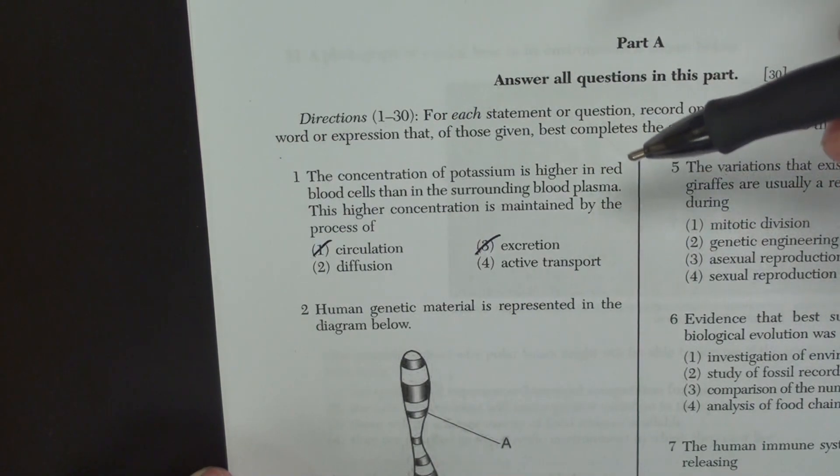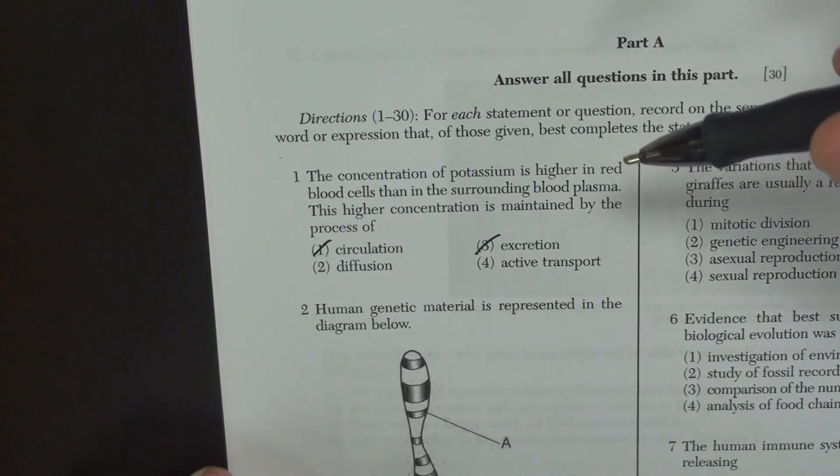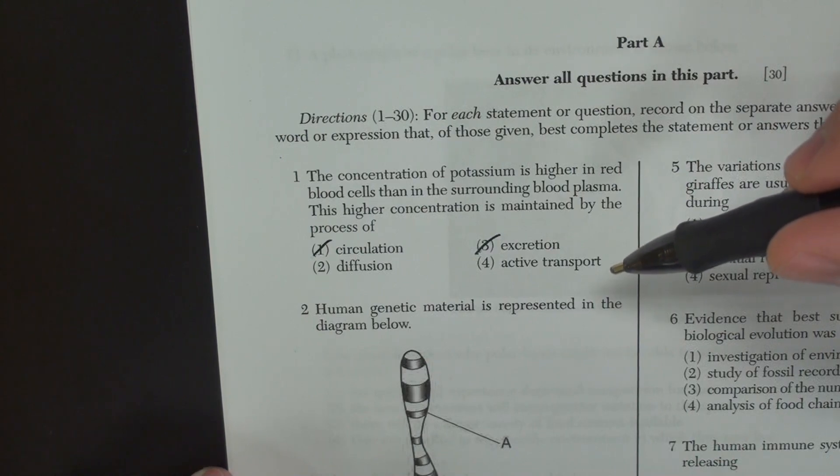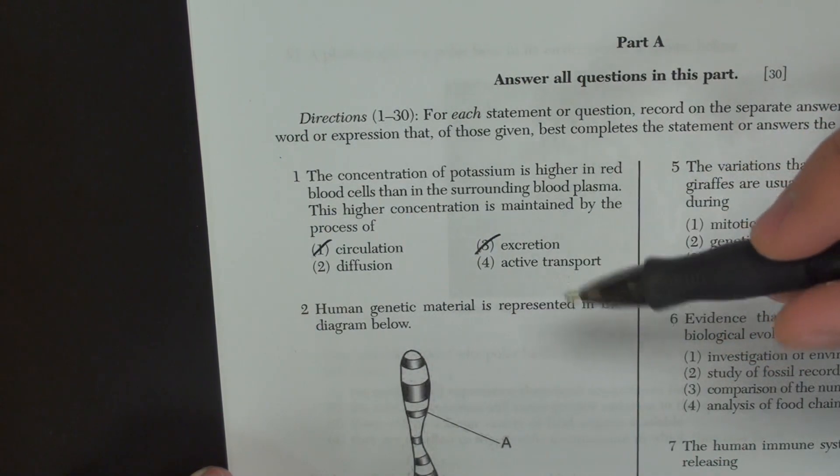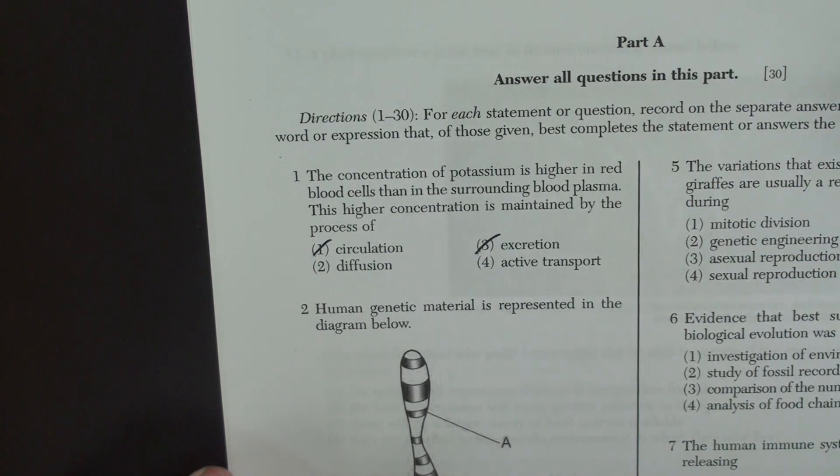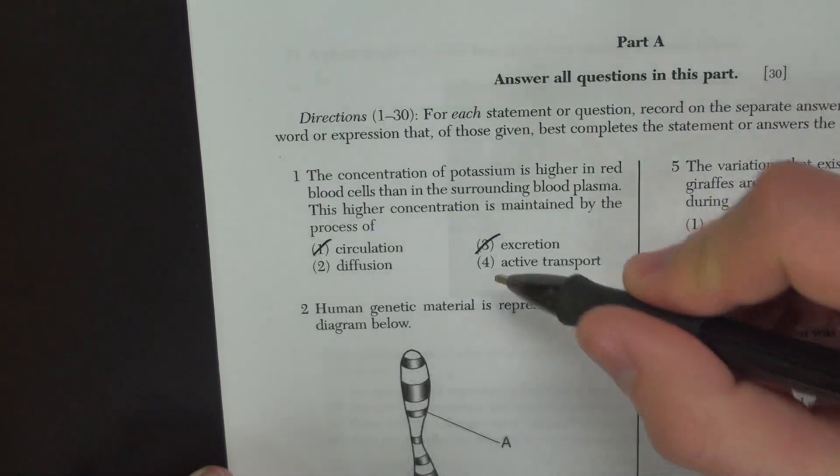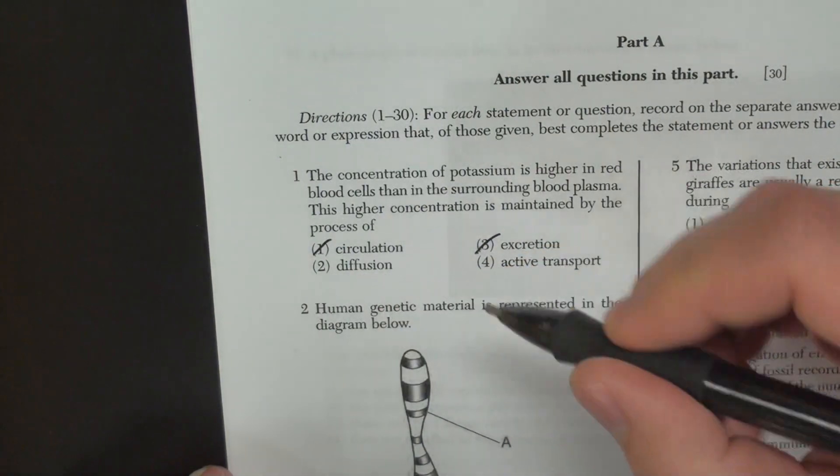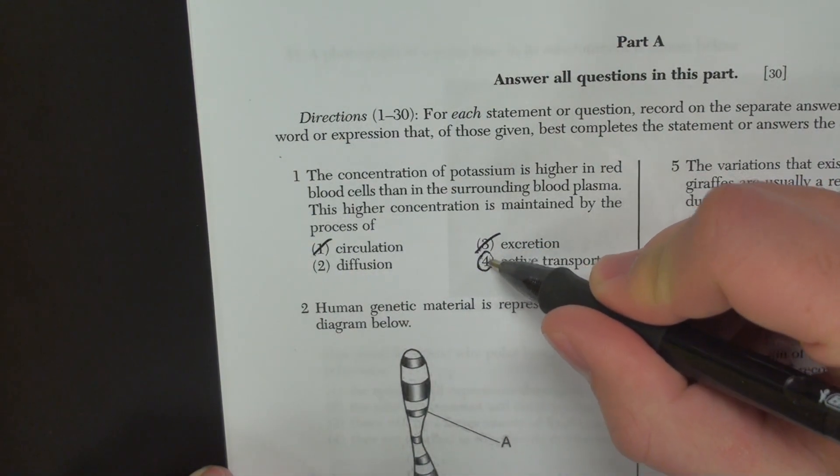Now, in order to keep that high, we need the process of active transport, which is actually the reverse of diffusion. It's going from a low concentration to high concentration, and for that you need energy. This is more of a trick question. It wants you to put two, but the correct answer is four.